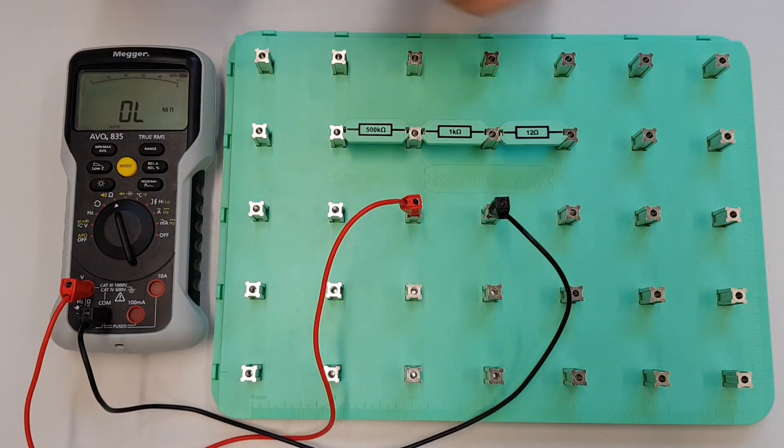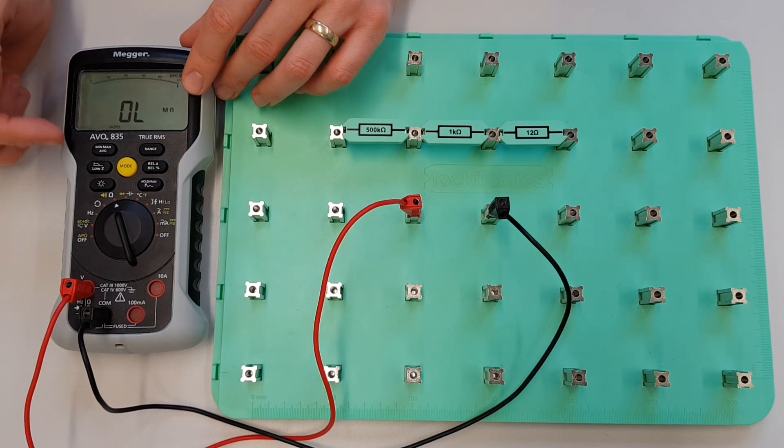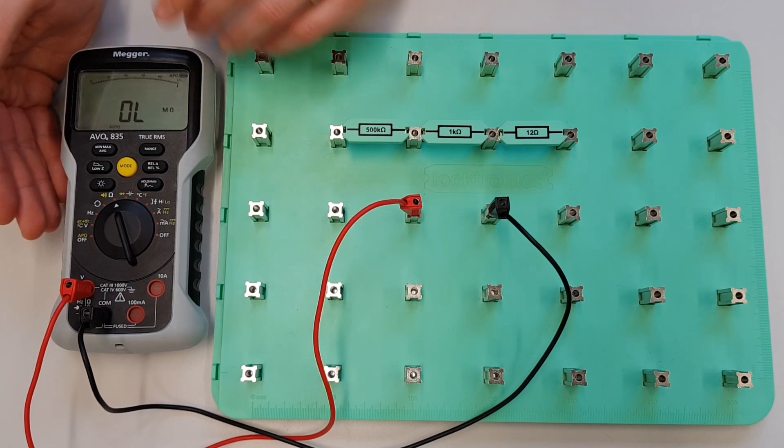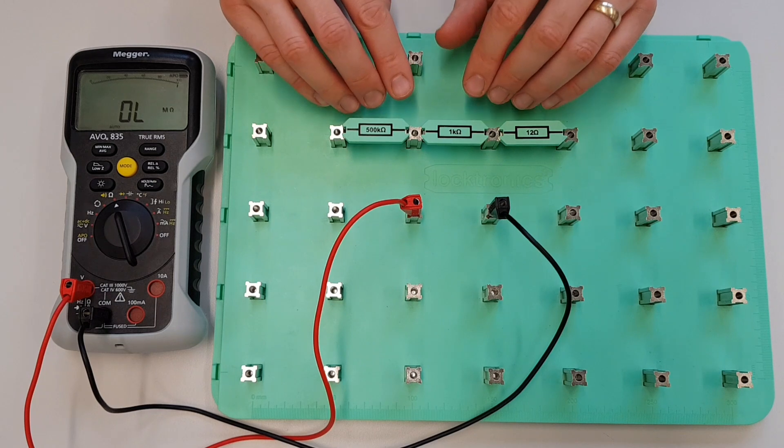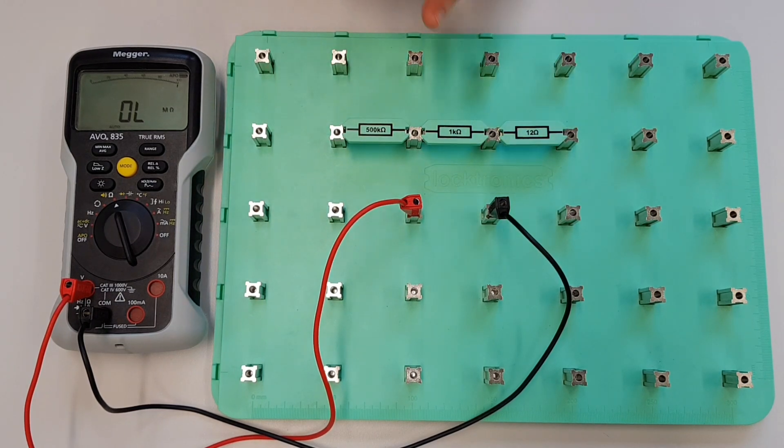So in summary, we've seen how to set up the multimeter, we've seen the value of the auto range function on here where it will automatically select the correct range, whether that's megohms, kilohms, or ohms. We've also seen that we won't get perfect values of resistance on our resistors due to manufacturer's tolerances. So thank you very much for watching.